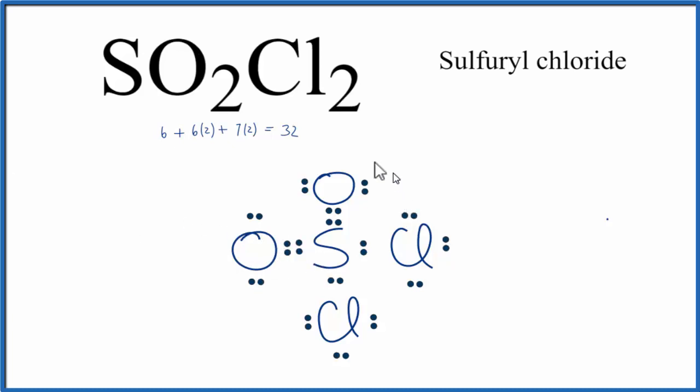if you recalculate the formal charges, and you can watch my video on that if you need help, you'll see that the formal charges on each of the atoms is zero. So this is the best Lewis structure for SO2Cl2.